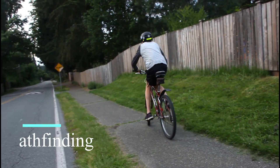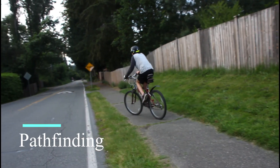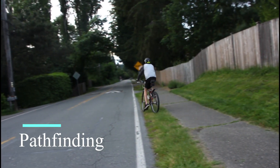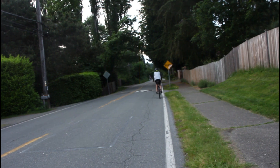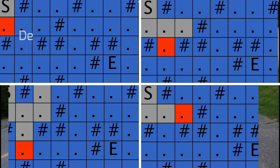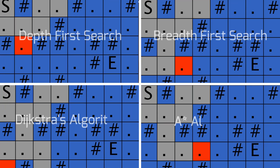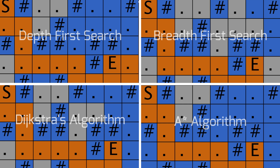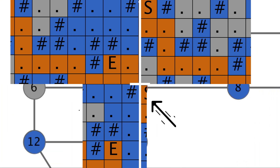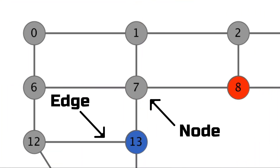That's where pathfinding comes in. Pathfinding is when a computer plots the shortest path between two points using a search algorithm. There are many different algorithms for exploring the environment, and the goal is to find the optimal shortest path from the start to the end node. A node is a point or vertex on the graph.